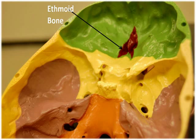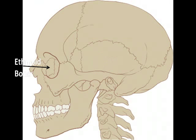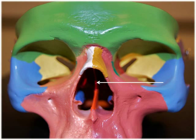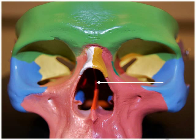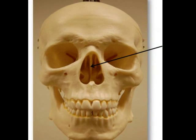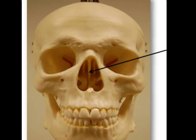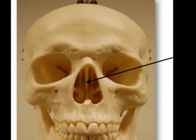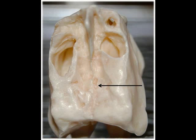Structurally, the ethmoid bone forms part of the anterior cranial floor, the medial wall of the orbits, and the superior nasal septum. The nasal septum is the partition which divides the nasal cavity into the right and left sides. The ethmoid bone plays major structural and functional roles within the nasal cavity. Its interior structure is spongy and porous, which creates a tremendous amount of membrane surface area.